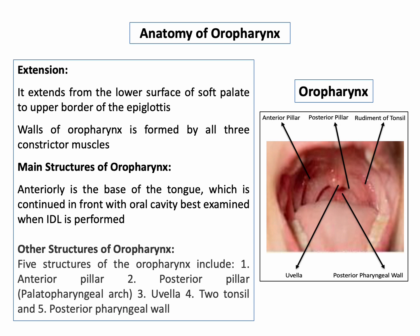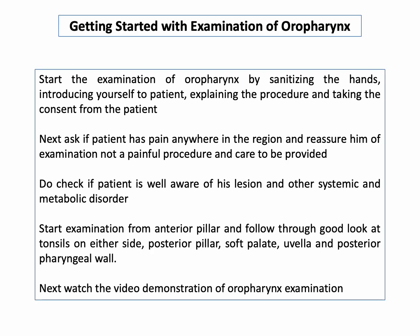During indirect laryngoscopy, the tongue depressor lies on the posterior one-third of the tongue. The five structures of the oropharynx that must be recognized during examination are: number one, the anterior pillar; number two, the posterior pillar or palatopharyngeal arch; number three, the uvula; number four, the tonsils on either side; and number five, the posterior pharyngeal wall.